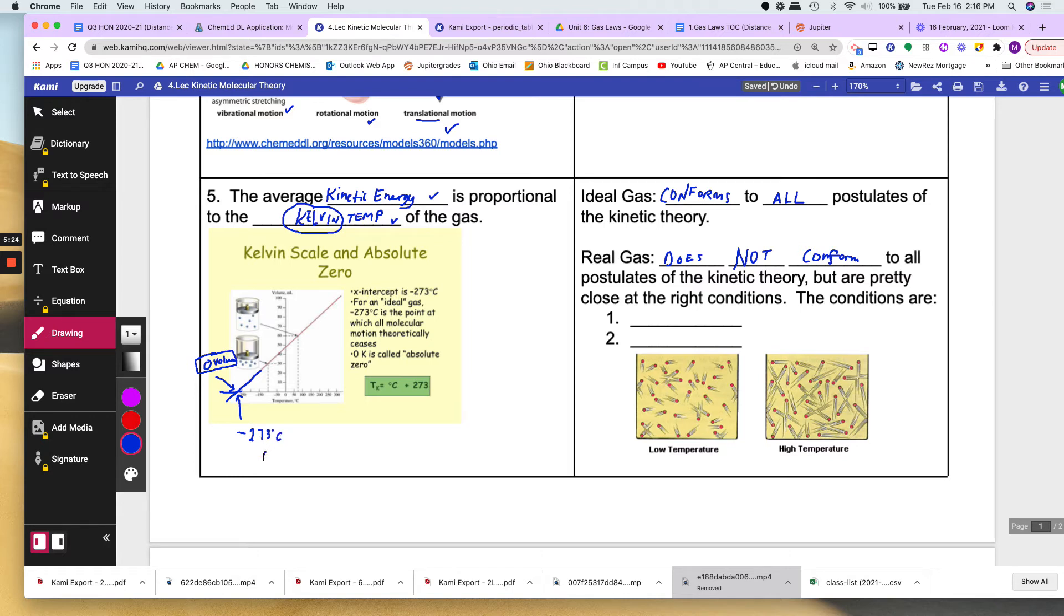We call that zero Kelvin. So that is the lowest temperature that can be theoretically achieved. So Kelvin always goes from zero on up. You will never get negative Kelvin because zero is the lowest. So it's always a positive number.